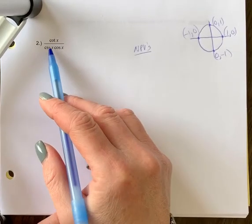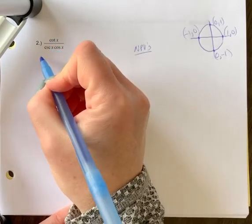Let's simplify number two, cotan x over cosecant x cos x.